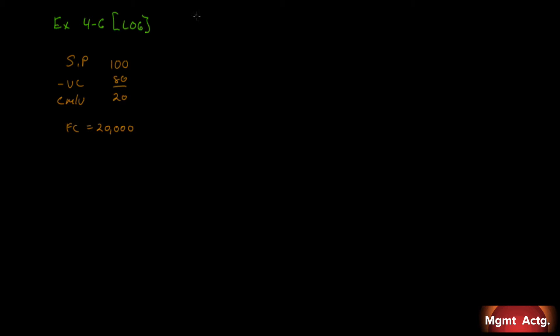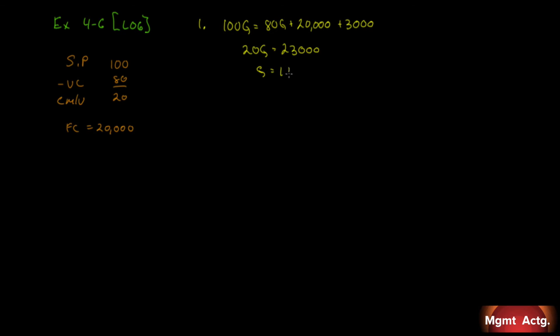Number one: using the equation method, solve for the unit sales required to earn a target profit before tax of $3,000. We solve for Q: 100Q = 80Q + $20,000 + $3,000. So 20Q = $23,000, and Q = 1,150 units.